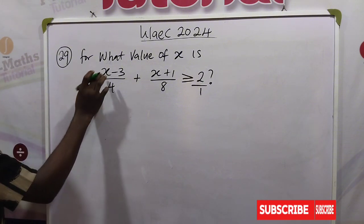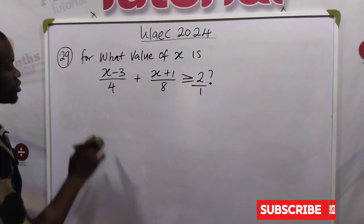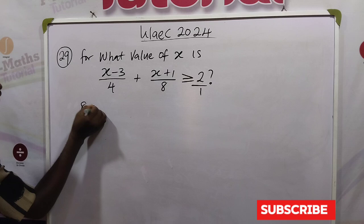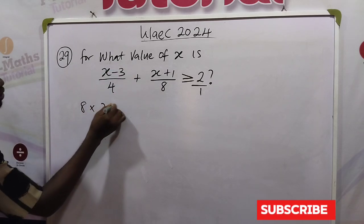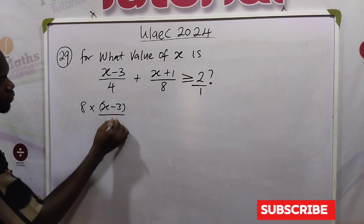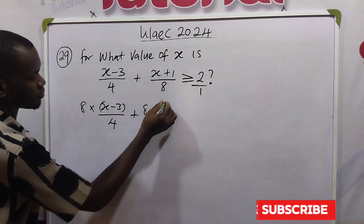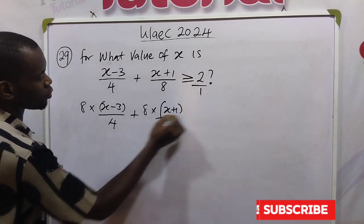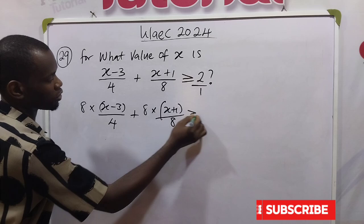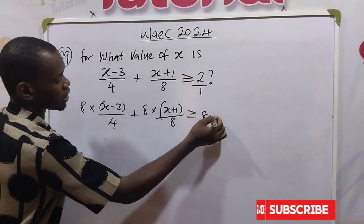So use 8 and multiply through the equation. That means we have 8 times x minus 3 over 4 plus 8 times x plus 1 over 8, greater than or equal to 8 times 2.